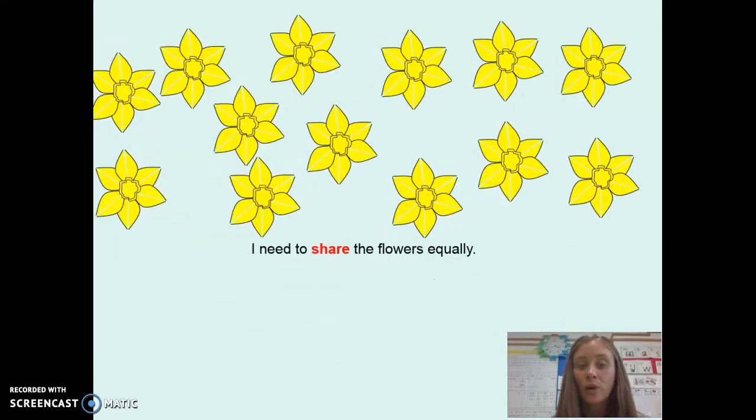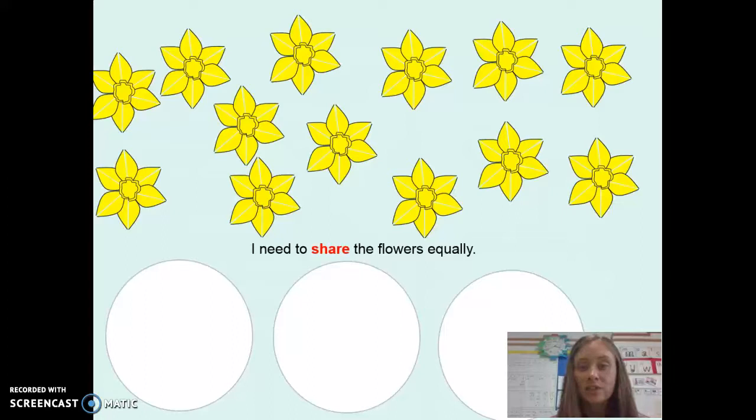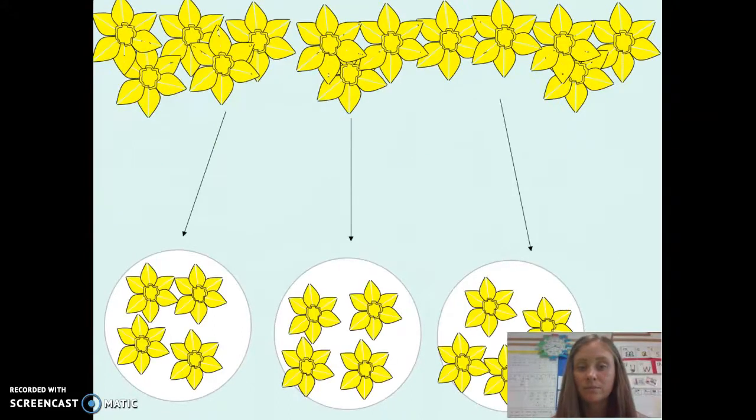Therefore we are using our sharing model. We have our three groups and we share the daffodils into each group making sure it is equal, so every group has exactly the same amount. Can you work it out? Brilliant. So there are four daffodils in each bunch.